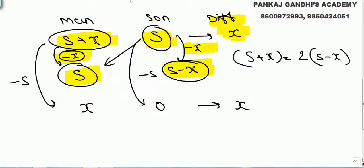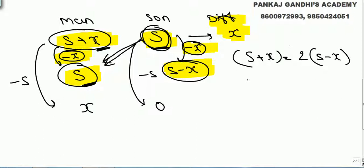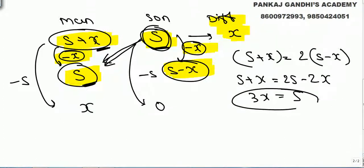Man's present age is s plus x, son's present age is s. When man was equal to son's present age — that is s years — that day son was x years earlier than his present age, so son's age was s minus x. Man's present age is twice of son's age at that time, giving us: s plus x equals 2s minus 2x, so s equals 3x.